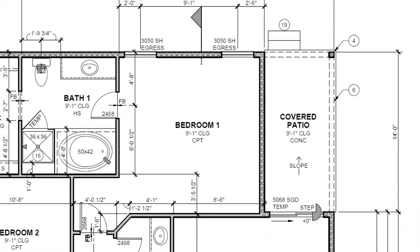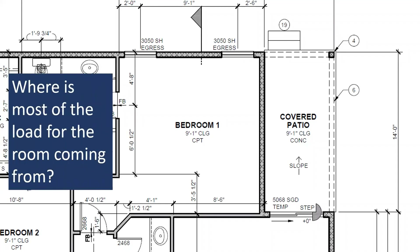The first thing we want to figure out when deciding where to place grills is where the majority of the load for that room is coming from. In cooling mode, we refer to this as the hot wall. This is going to be any exterior walls, and especially walls with windows, as that is where the most heat transfer is going to be happening. We're not really concerned with walls that are adjacent to other conditioned rooms, since there's no load coming from there.